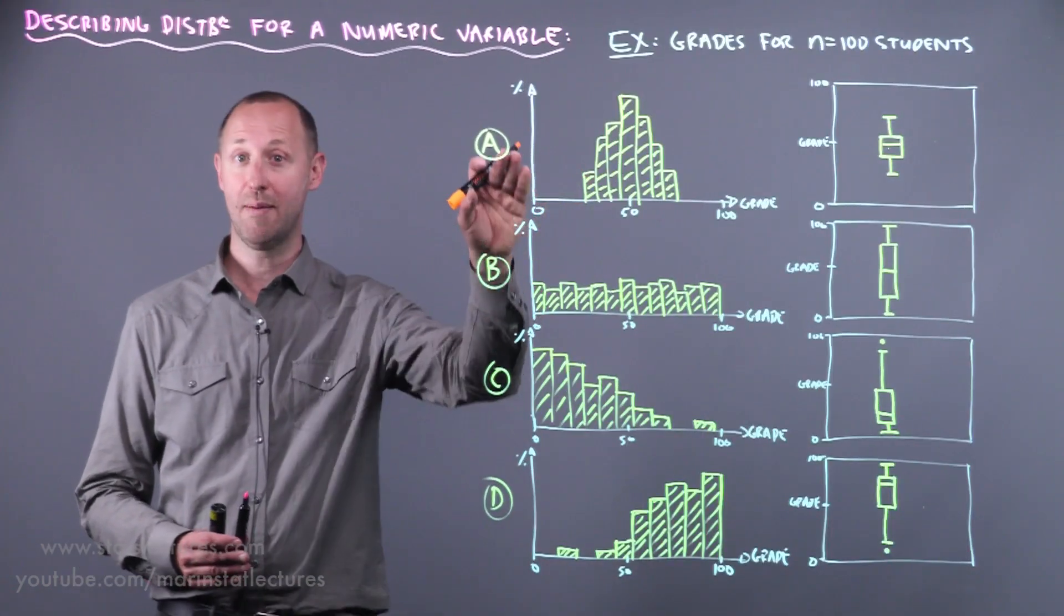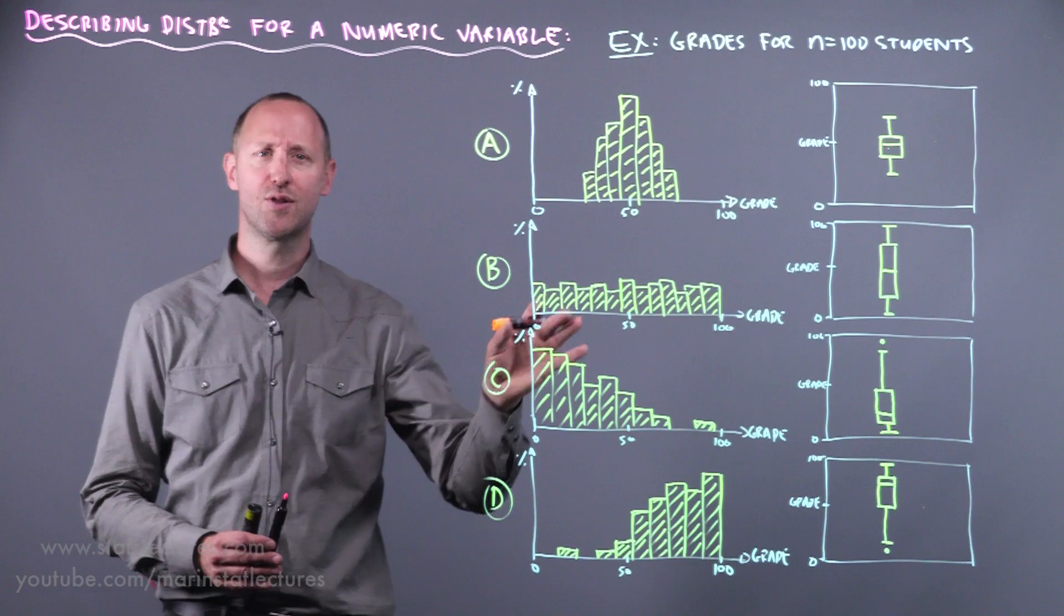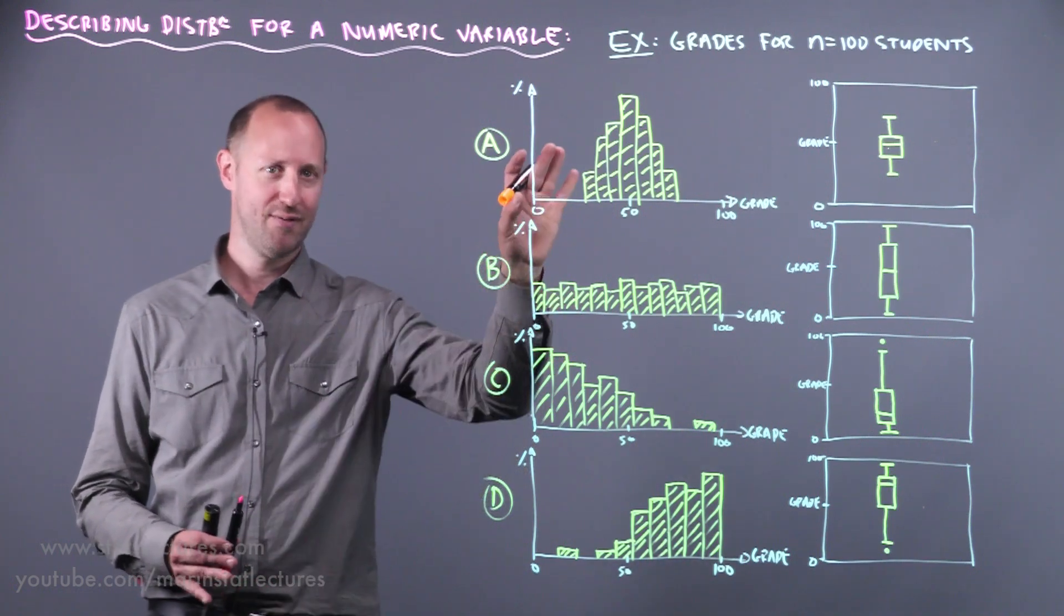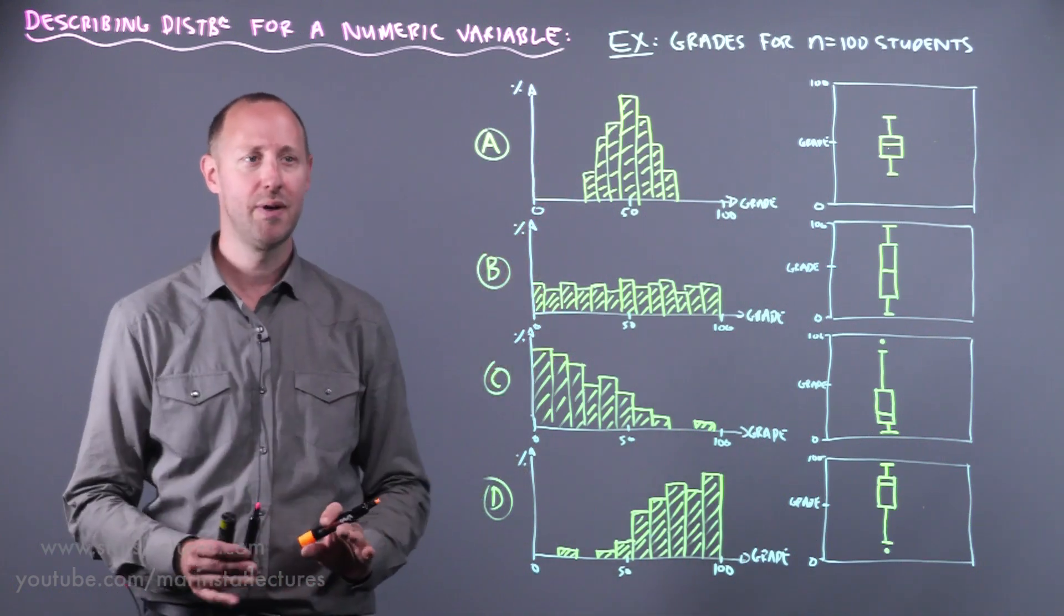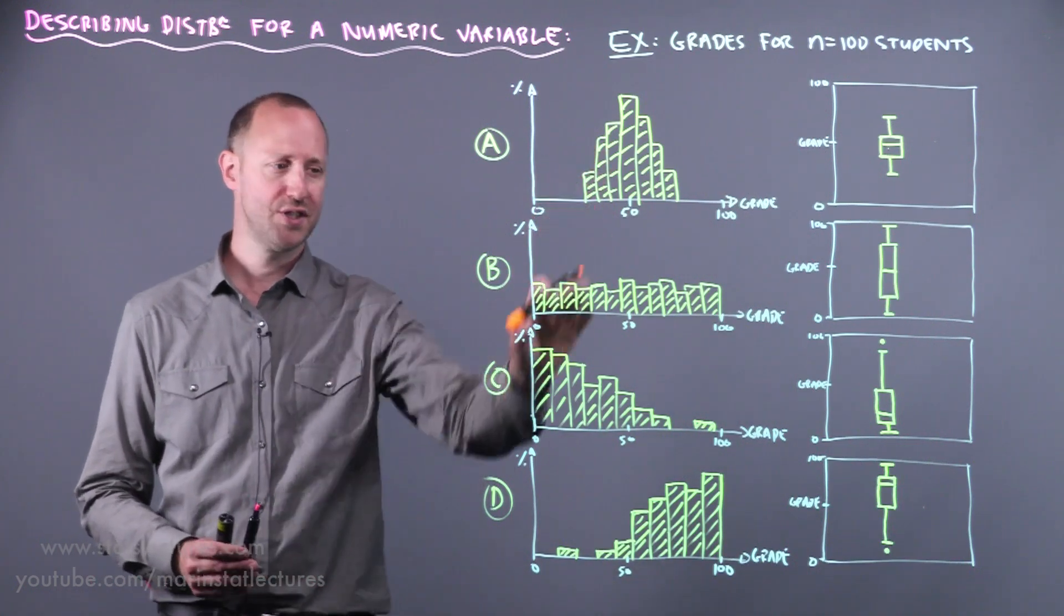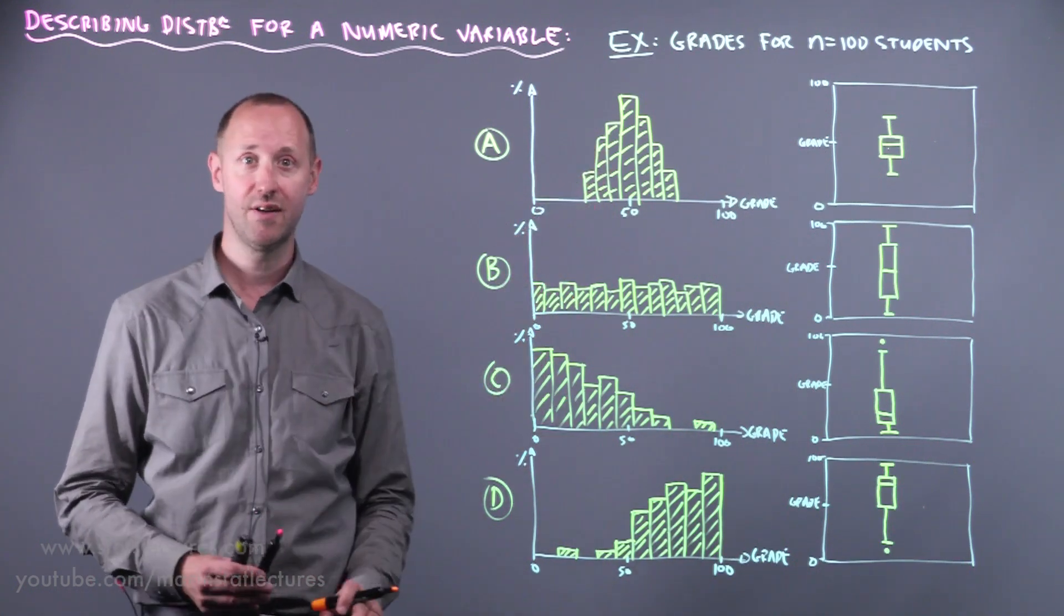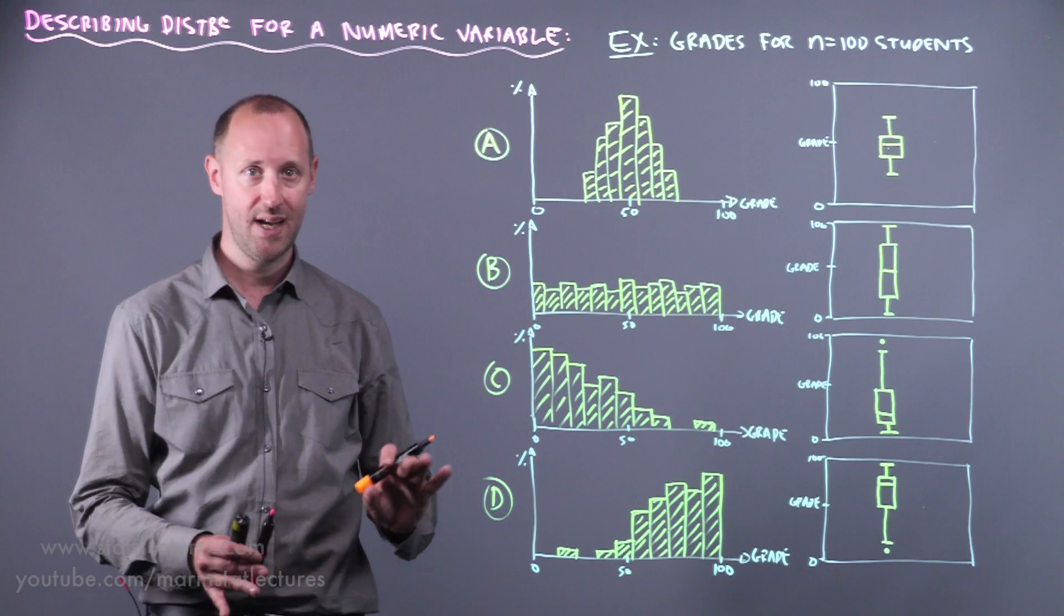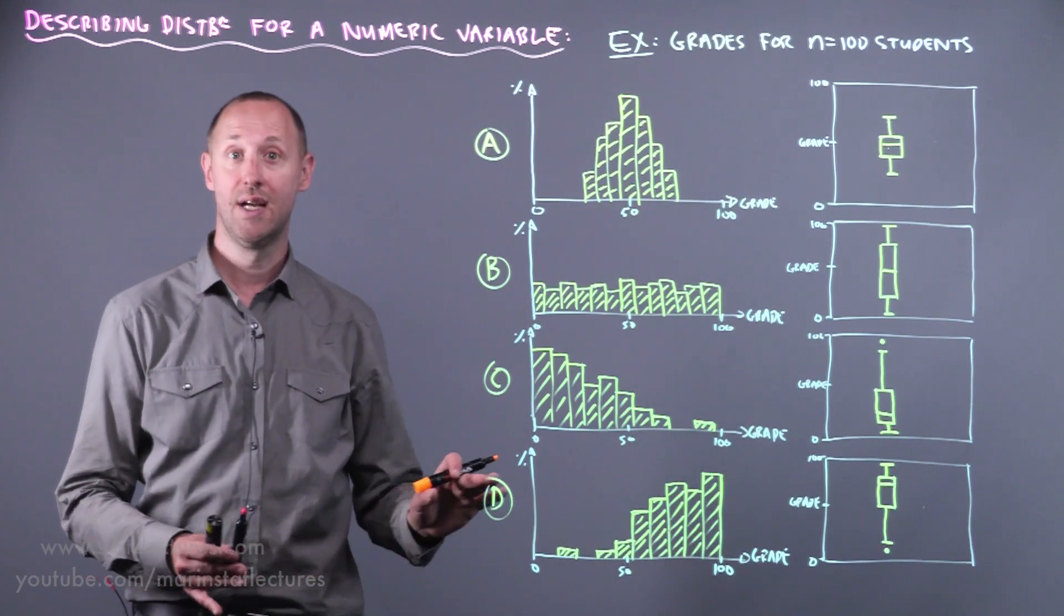So here I've drawn four examples A, B, C, D and they're sort of artificial textbook very nice and neat examples, but again to make the discussion easy for now. So first let's go through each of these here and attach kind of a qualitative or descriptive label to the shape.